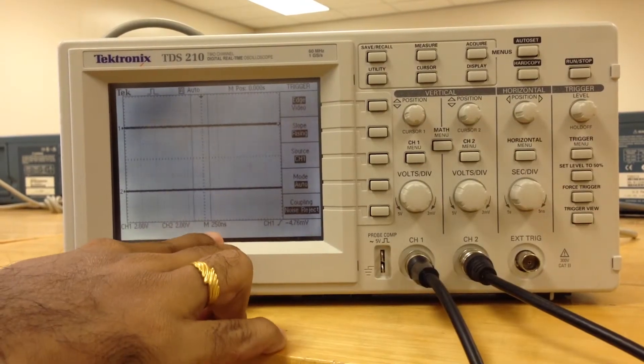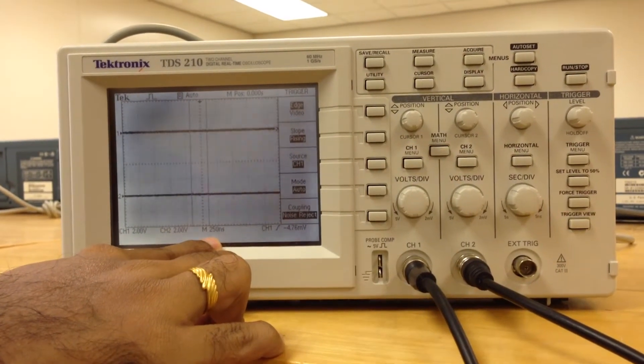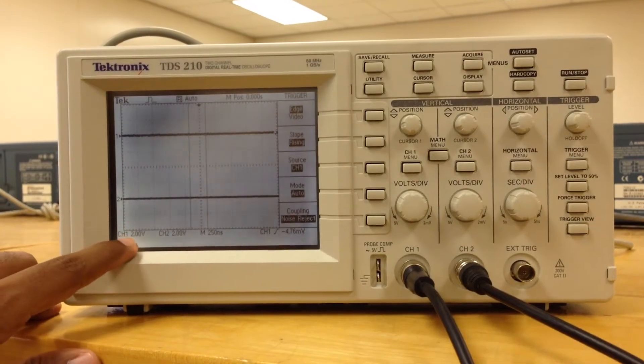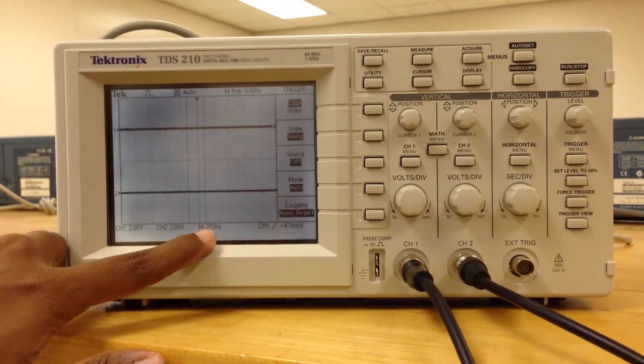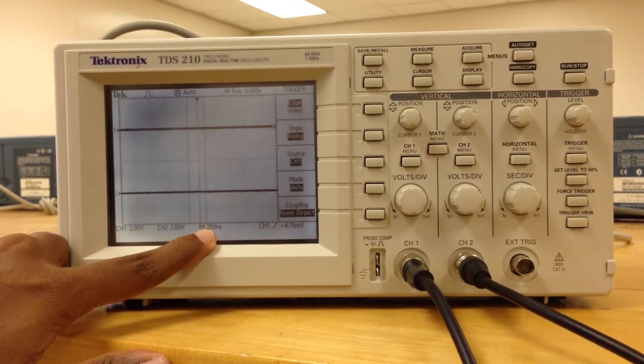Adjust until it shows 250 nanoseconds. Channel 1: 2 volts, channel 2: 2 volts, and time per division is 250 nanoseconds.